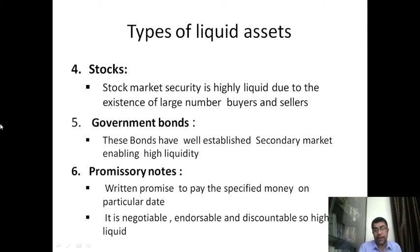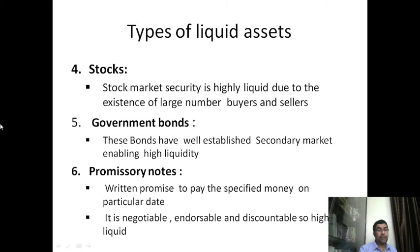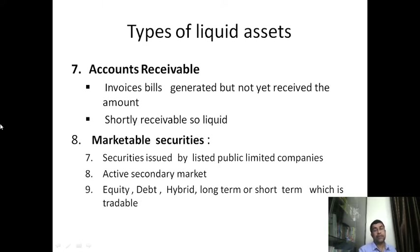Government bonds have a well-established secondary market enabling high liquidity, as they can be sold in the money market. Promissory notes are written promises to pay a specified amount on a particular date. They are negotiable instruments — endorseable and discountable — and therefore highly liquid. As per the Negotiable Instruments Act, a bill of exchange or promissory note is an instrument in writing containing an order to pay a certain sum of money to the bearer at maturity. Accounts receivable and securities used by listed public companies are also highly liquid with an active secondary market.